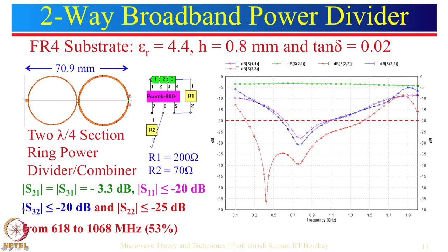S21 and S31 are now minus 3.3 dB. Recall one ring gave minus 3.17 dB; with the additional section there is a little more loss, hence minus 3.3 dB. The S11 < minus 20 dB curve is shown on a much broader frequency scale.